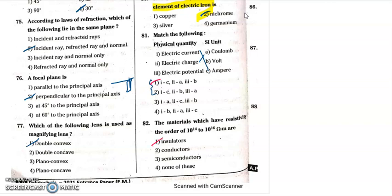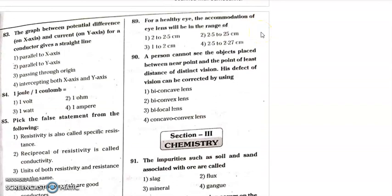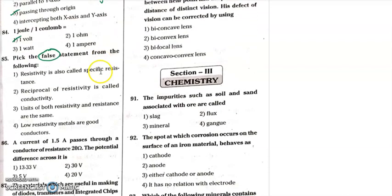Question 82: the material which has the highest resistivity is an insulator. So question 82, option 1 is the correct answer. Question 83: the graph between potential difference and current for a conductor gives a straight line — that is the V-I graph, a linear graph. That is the correct answer.